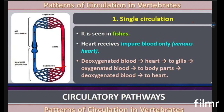In single circulation, seen mainly in fishes, deoxygenated blood from the body enters the heart, which receives only impure blood — that's why the fish heart is called a venous heart. This impure blood is pumped into the gills where oxygenation takes place, and then oxygenated blood is directly supplied to the body parts, returning as deoxygenated blood back to the heart.